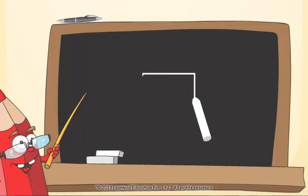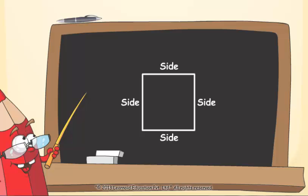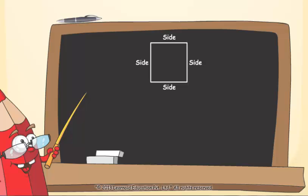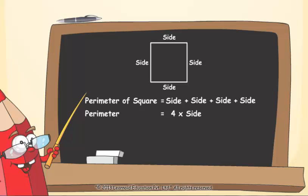Square is a type of rectangle, whose length and breadth are equal. All four sides are equal. Perimeter of a square is equal to side plus side plus side plus side, or four into side. Perimeter of a square is equal to four into side.